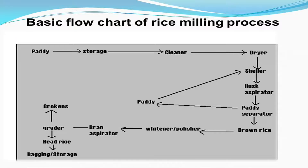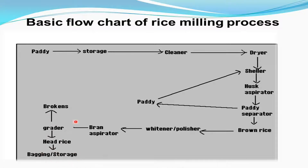The basic flowchart of the rice milling process is as follows: paddy is harvested, stored, then goes through cleaning, drying, shelling, husk aspirator, and paddy separator. The paddy is shelled and then paddy is separated; brown rice is obtained, then polished by a polisher, then bran aspirator, then grading where brokens are separated from head rice, and finally packaging.